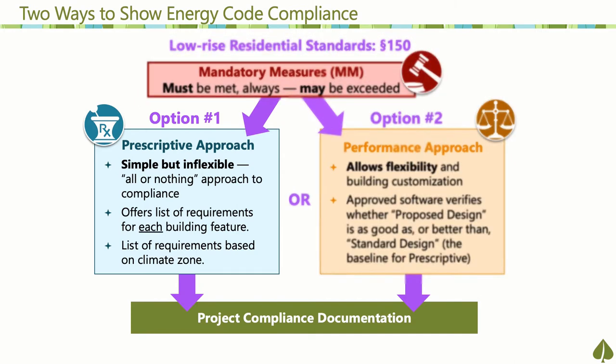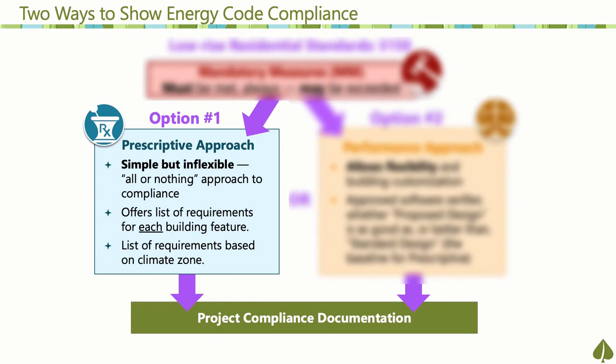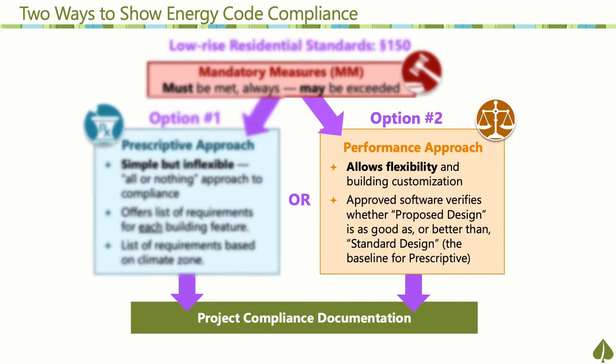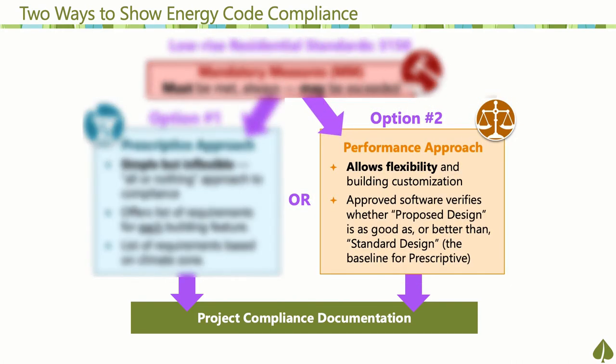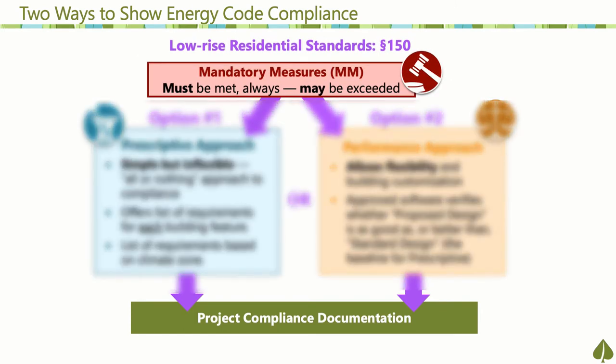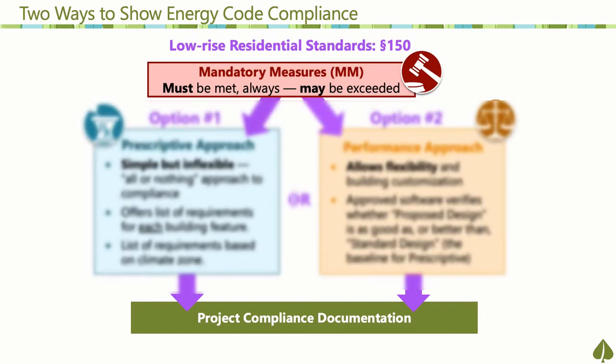The prescriptive approach uses a project's scope and climate zone location to generate a list of applicable energy requirements. To comply, all requirements must be met — missing just one will make the project fall out of compliance. The performance approach is a more flexible pathway for building customization, but it requires special software to analyze the project's energy efficiency and verify it will at least match or exceed the prescriptive baseline. Note that there is also a set of requirements called mandatory measures — they must always be met or exceeded, regardless of the chosen compliance pathway.